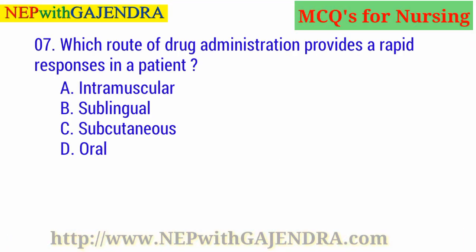Which route of drug administration provides a rapid response in a patient? A. Intramuscular. B. Sublingual. C. Subcutaneous. D. Oral. The right answer is B: Sublingual.